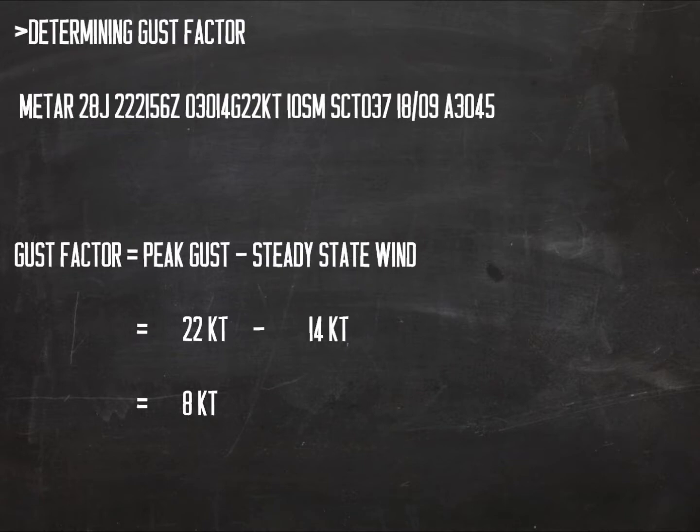When performing an approach in gusting or rapidly changing winds, it is recommended that pilots add additional speed on approach to better protect against the stall should a sudden airspeed loss occur. It is therefore a common practice to add one-half the gust factor correction to the VREF speed.